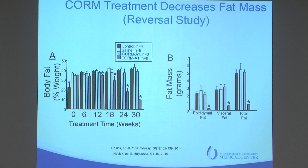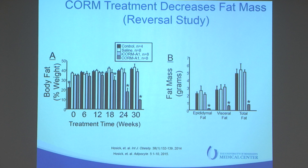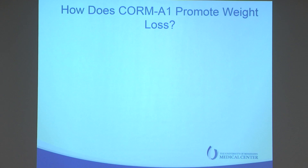The CORM was also associated with a decrease in fat mass. We measured this by whole-body echo MRI to get body composition, doing it every six weeks during the study. We started to see effects about 12 weeks in, and these effects were sustained all the way to 30 weeks. Importantly, these animals didn't lose muscle mass — they actually gained muscle mass over time. So they had decreases in body fat and increases in lean muscle mass. At the end of the study, the epididymal, visceral, and total fat pads were all decreased in the carbon monoxide donor-treated mice.